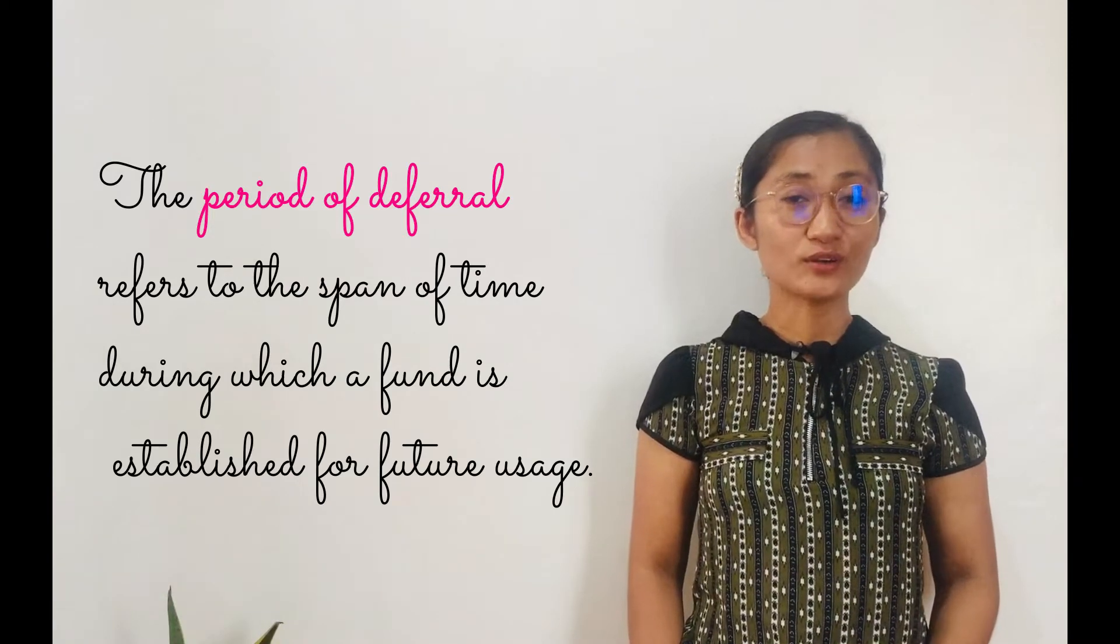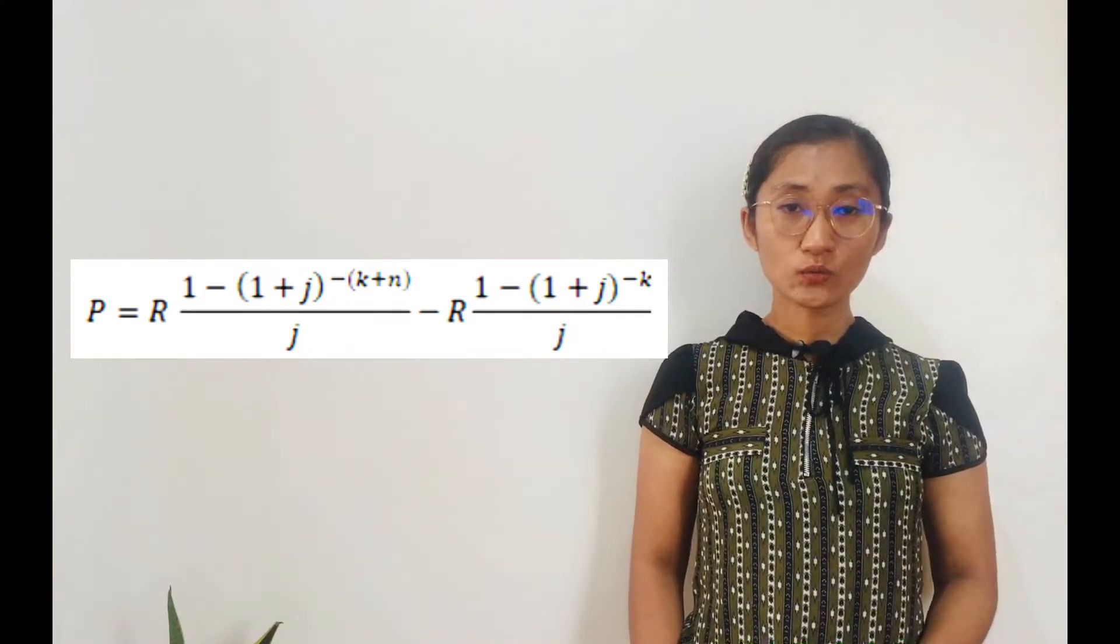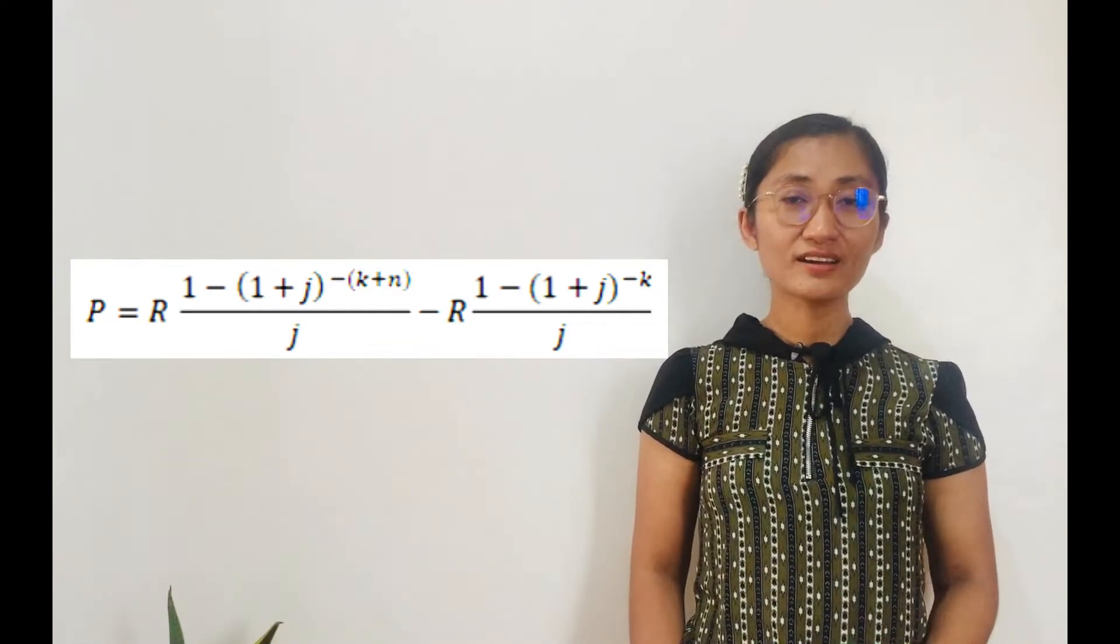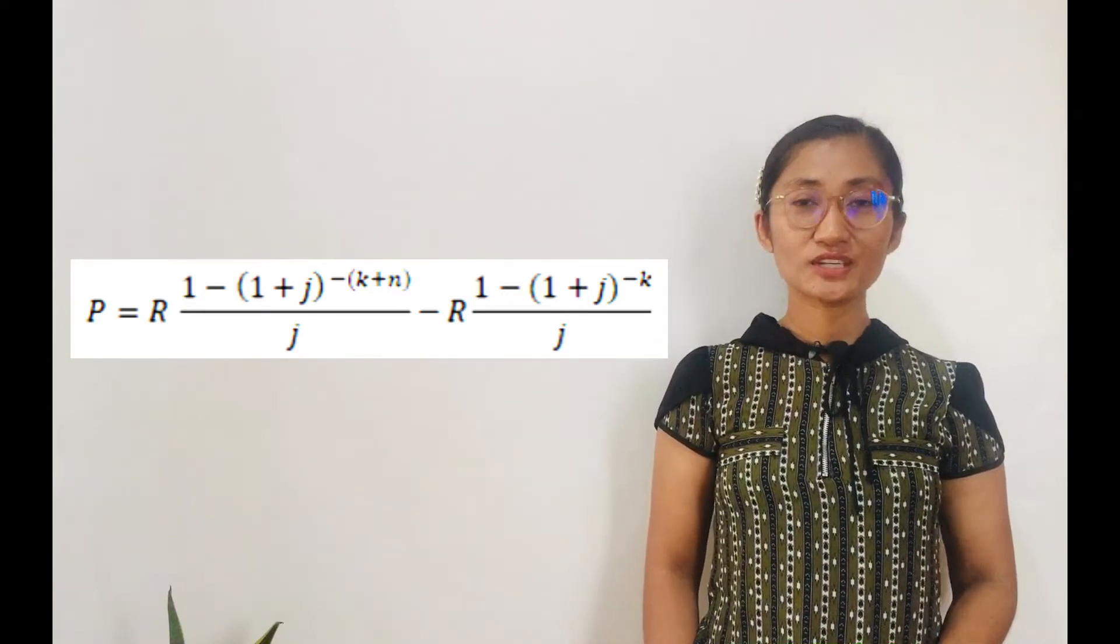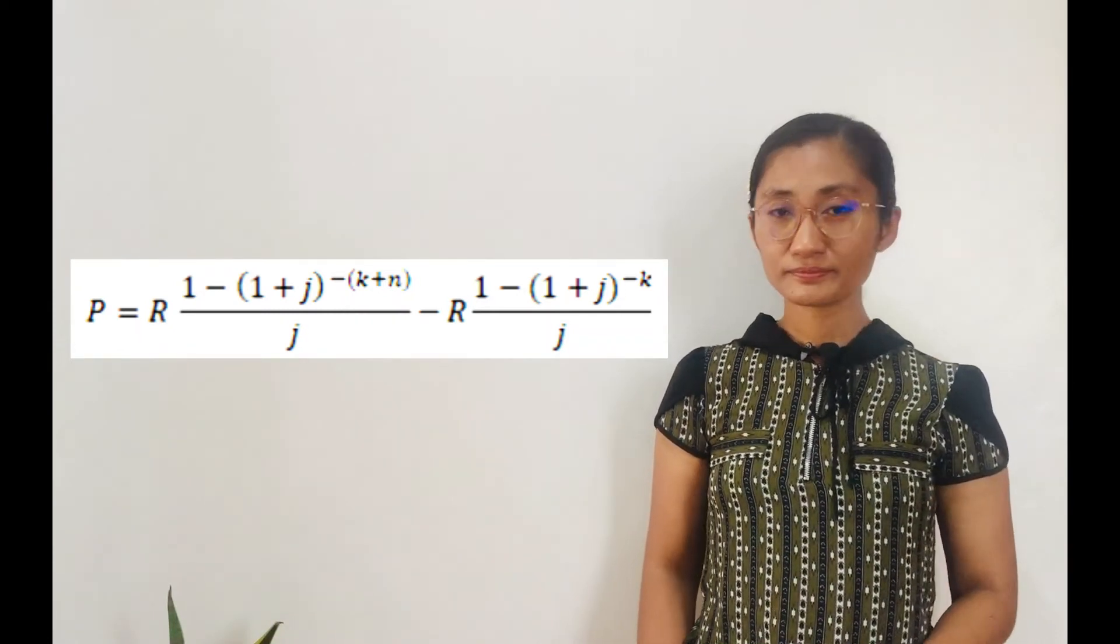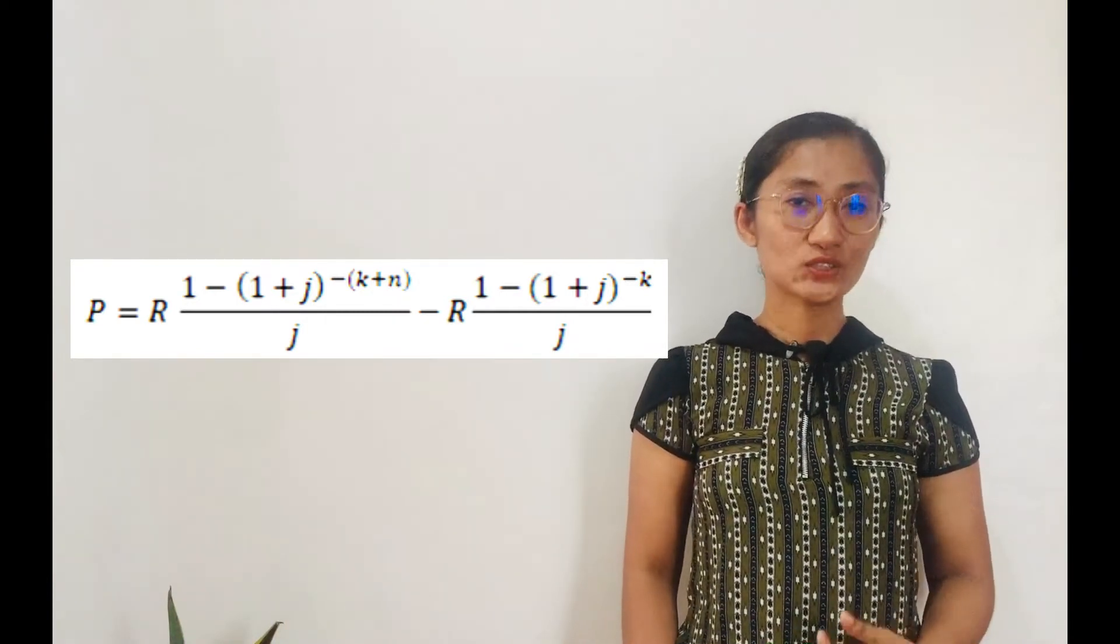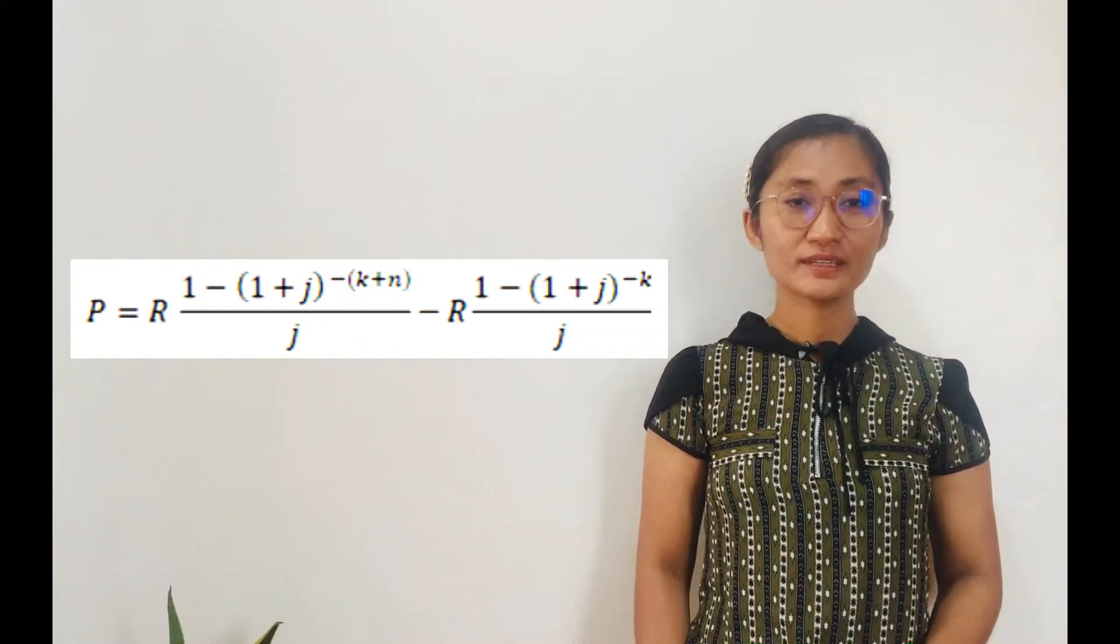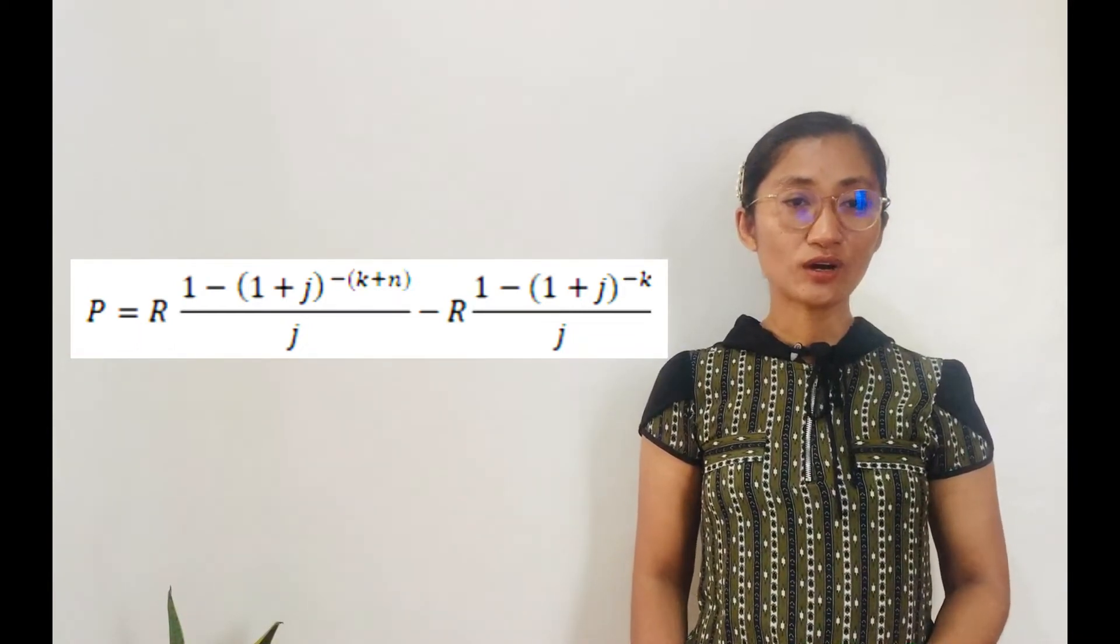To calculate the present value of a deferred annuity, we use this formula. P equals R times the difference between two expressions. First expression is R times 1 minus quantity 1 plus J, close quantity, raised to the exponent negative of K plus N over J. The other expression is R times 1 minus quantity 1 plus J, close quantity, raised to the negative K over J. So the formula is a bit longer for the present value of a deferred annuity.